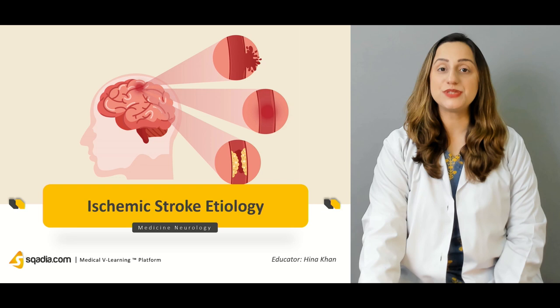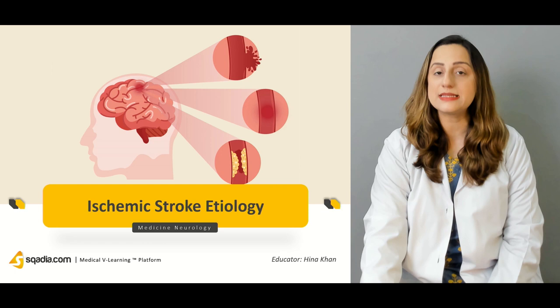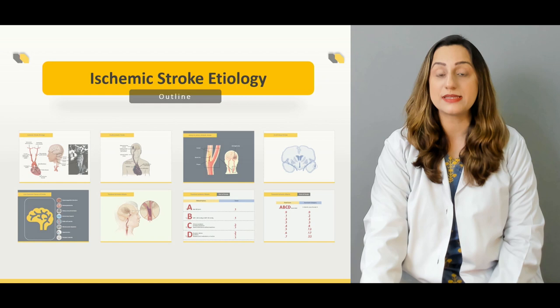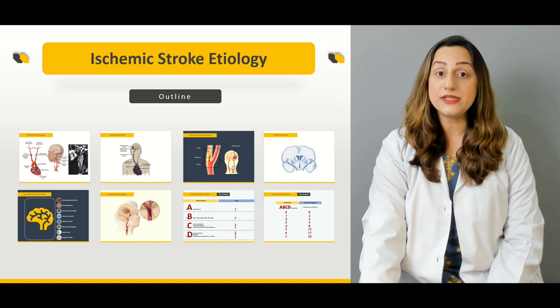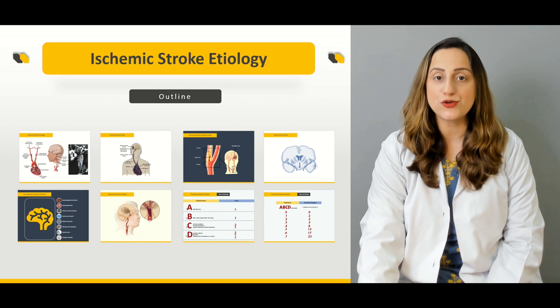There are multiple factors that contribute towards the development of brain damage whenever there is an insufficient blood supply to a particular area of the brain. We're going to go through the cascade of events that take place before brain damage occurs in a particular area. The key features would include the history taking, the examination, and the risk factors that contribute towards this particular condition in the patient.